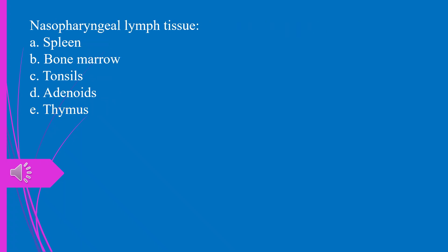Question 5. Nasopharyngeal lymph tissue: a) spleen, b) bone marrow, c) tonsils, d) adenoids, e) thymus. The answer is d, adenoids.